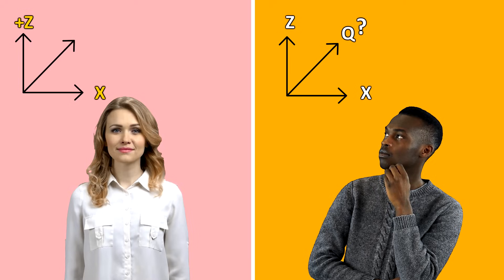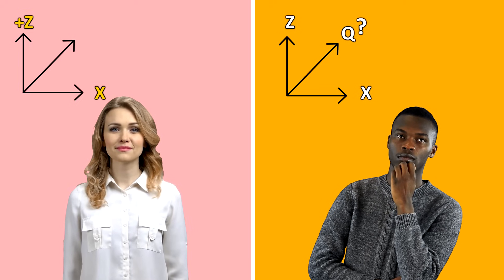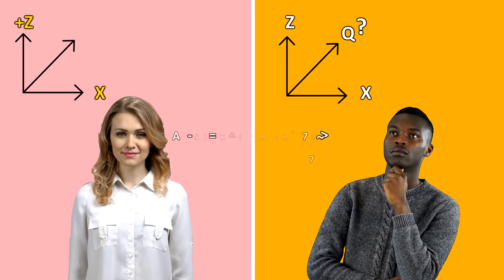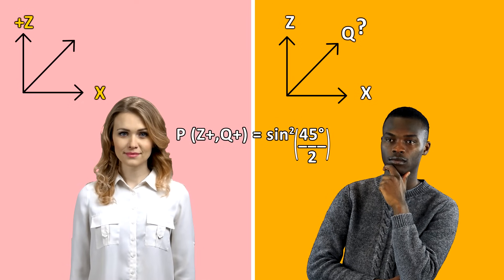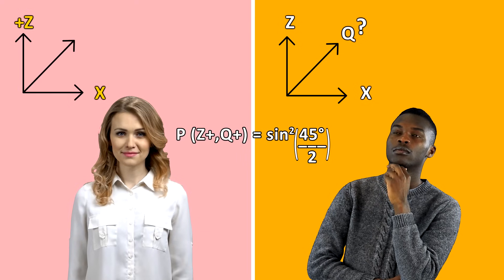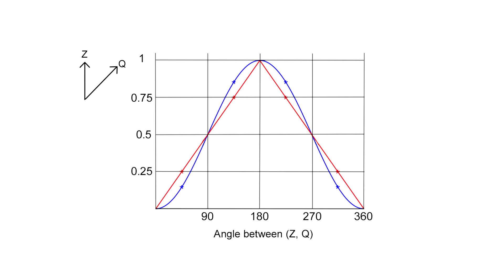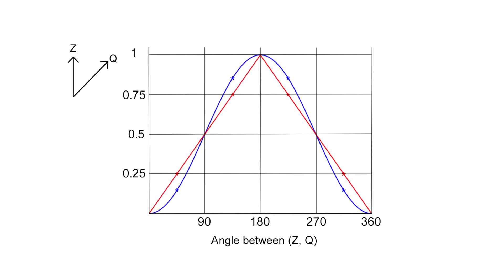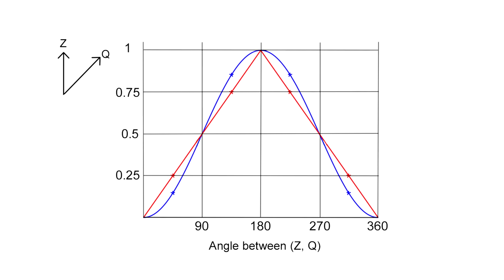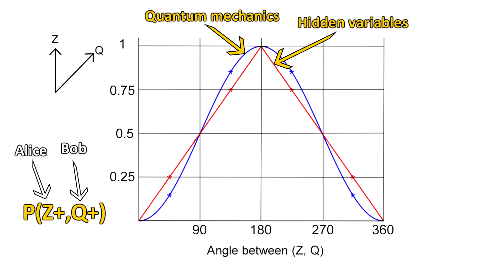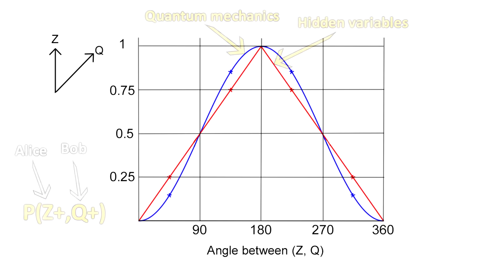And that probability of Bob measuring q to be positive after Alice has measured z to be positive, if the angle between them is 45 degrees, is given by the following equation: sine squared of 45 degrees divided by 2. This comes from the math of quantum mechanics. This is the critical difference between quantum mechanics and hidden variables theory. The probability that Bob measures the same spin as Alice, depending on the difference in angle measured, is not linear but looks like a sine wave.